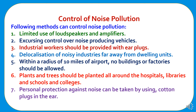Methods to control noise pollution include: limited use of loudspeakers and amplifiers; exercising control over noise-producing vehicles; industrial workers should be provided with ear plugs; delocalization of noisy industries far away from dwelling units; within a radius of 10 miles of airports, no buildings or factories should be allowed; plants and trees should be planted around hospitals, libraries, schools, and colleges; and personal protection against noise can be taken by using cotton plugs in the ears.